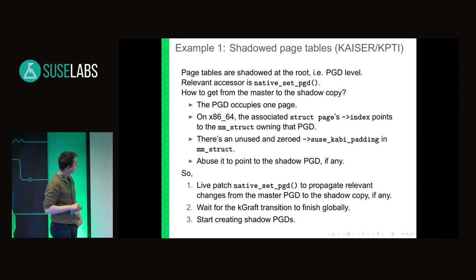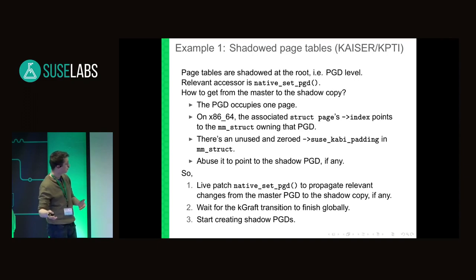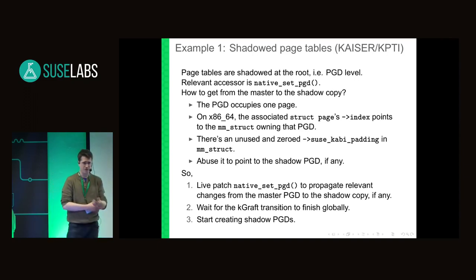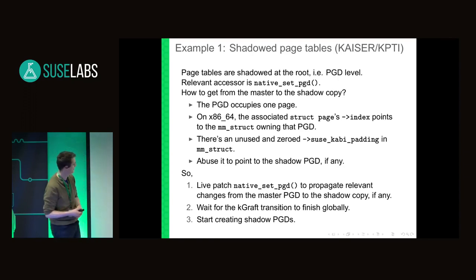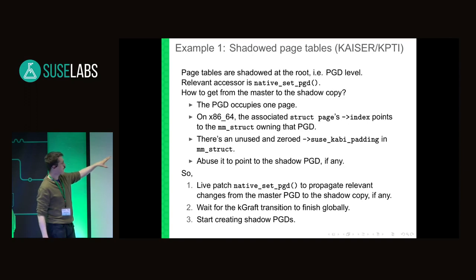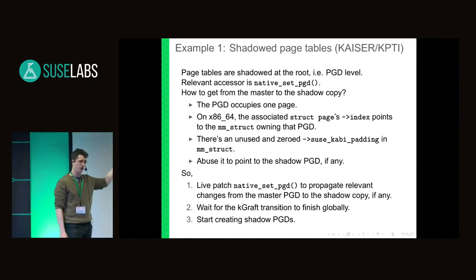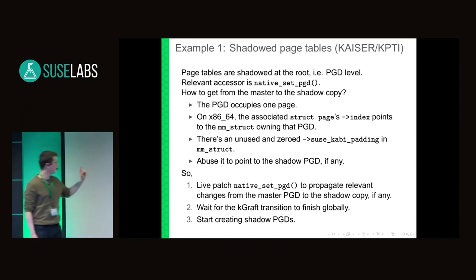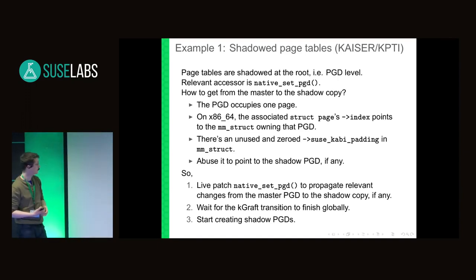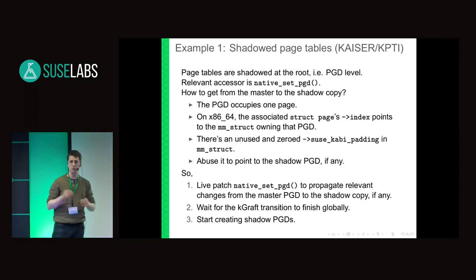A minor complication is how to associate the master or internal page tables with the new shadow page tables. Normally we would use shadow variables, but here we've got some free space we can use. The PGD — the original one — lives in a page. On x86, the struct page points to the owning MM struct, and this MM struct has some spare space, so we can use it to point to the shadow. This means we can get from the original PGD to the shadow PGD.